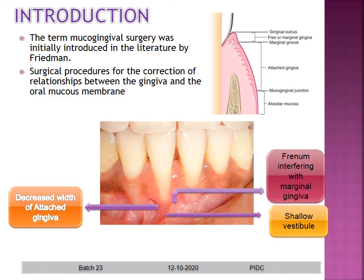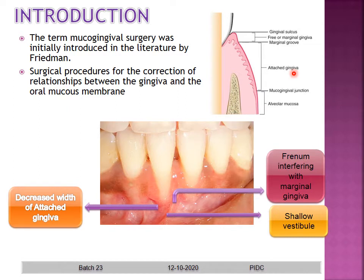Before we go into the abnormalities, I would like to stress upon the normal features. As you all know, this is the free gingival margin followed by the attached gingiva. Goldman put forward a theory called the tissue barrier concept, where he stated that a dense collagenous band of tissue retards the inflammation from spreading to the underlying bone. This means the attached gingiva has to be sufficiently dense, collagenous, and present in adequate amount. If not, it might result in problems.